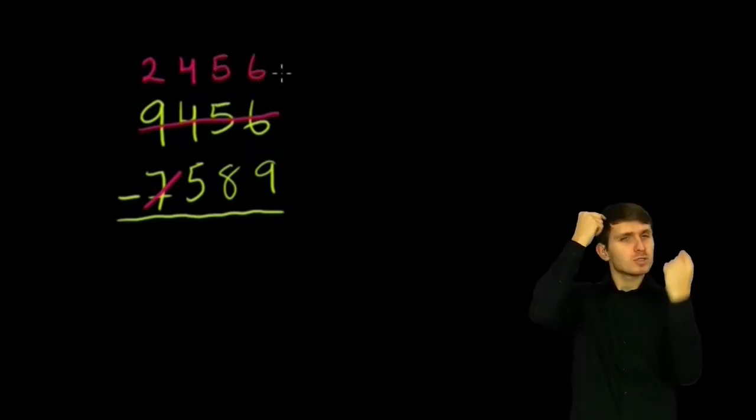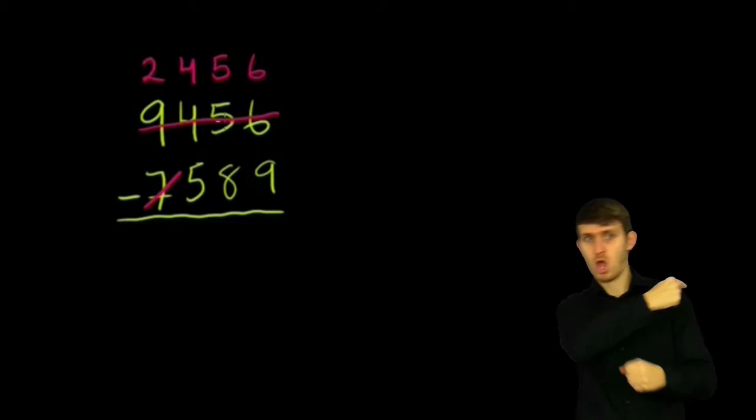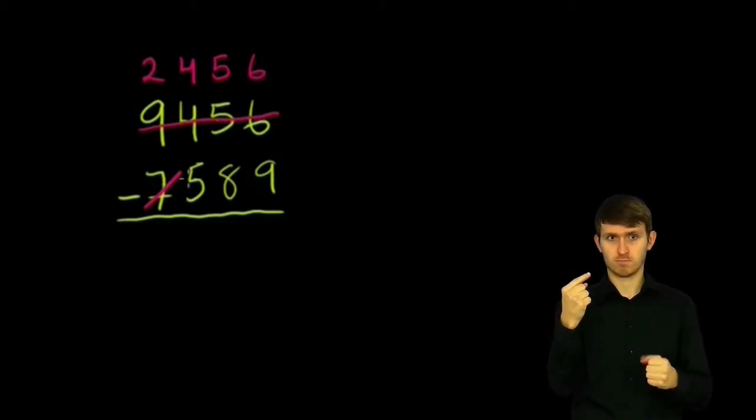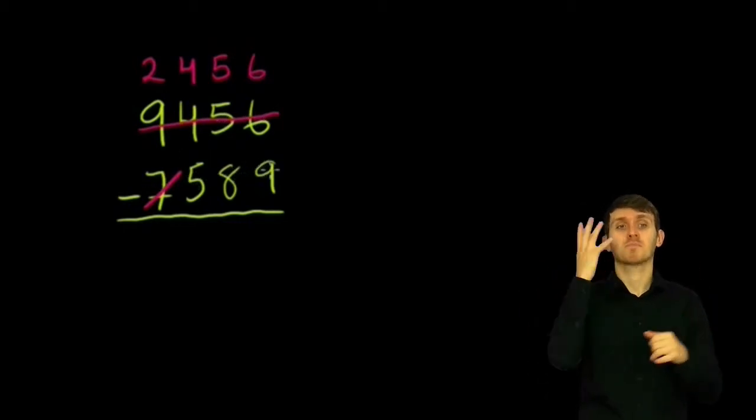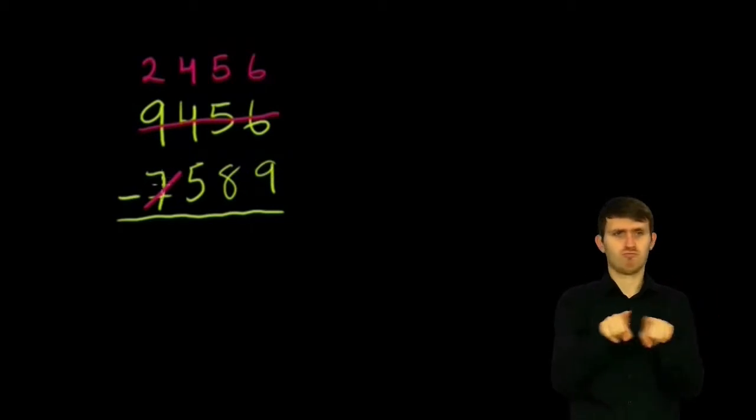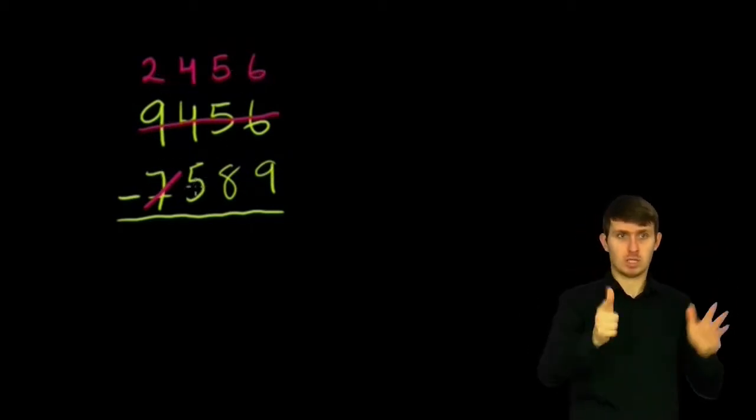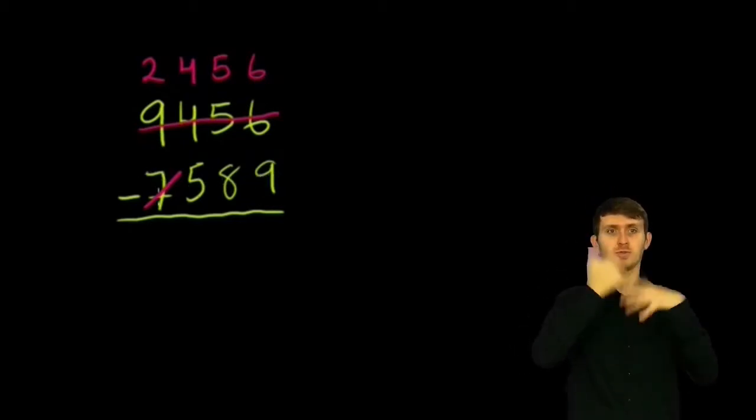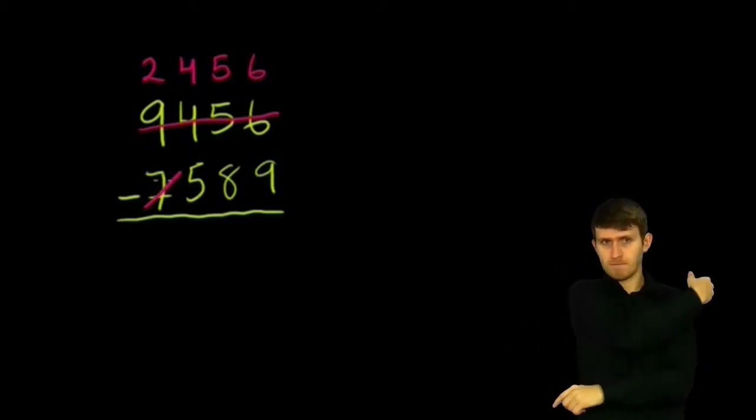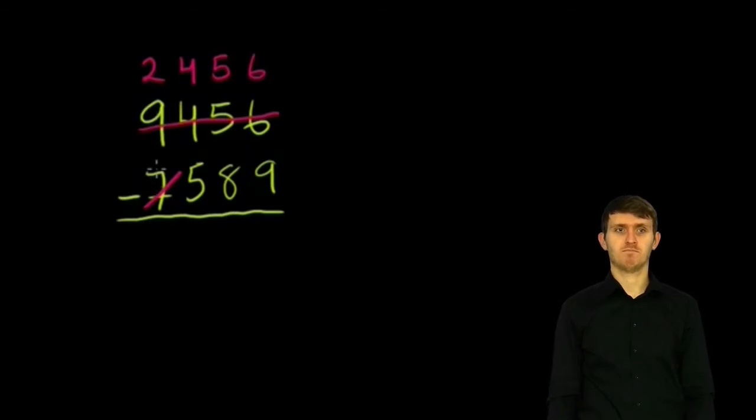So in my head, I tell myself that 9,456 minus 7,589 is the same thing as, if I just subtract out the 7,000, as 2,456 minus 589, right? I took the 7,000 out of the picture. I essentially subtracted it from both of these numbers.